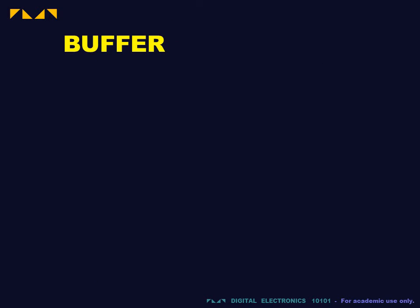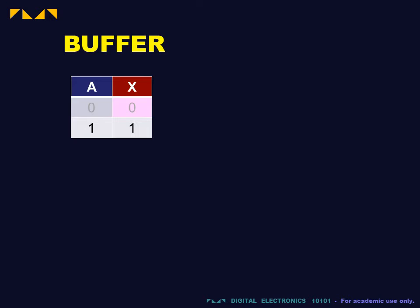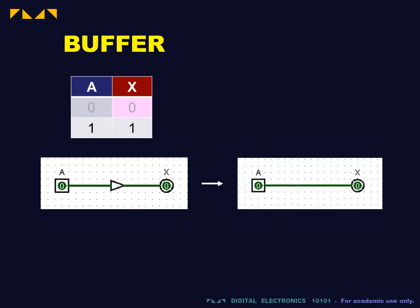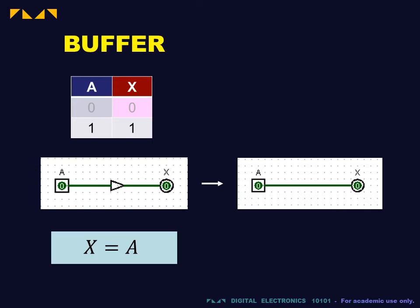The first gate is the buffer. For the buffer, the output is true if and only if the input is true. The buffer thus implements the conditional affirm. In a logic diagram, the buffer is represented by the small elongated triangle. For logical purposes, it is not necessary to include a buffer — joining the input to the output with a wire will suffice. The Boolean expression reads x is equal to a.